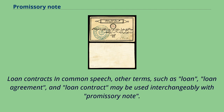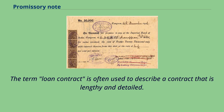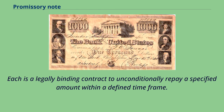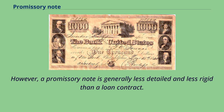Loan contracts — in common speech, other terms such as loan, loan agreement, and loan contract — may be used interchangeably with promissory note. The term loan contract is often used to describe a contract that is lengthy and detailed. A promissory note is very similar to a loan; each is a legally binding contract to unconditionally repay a specified amount within a defined time frame. However, a promissory note is generally less detailed and less rigid than a loan contract.